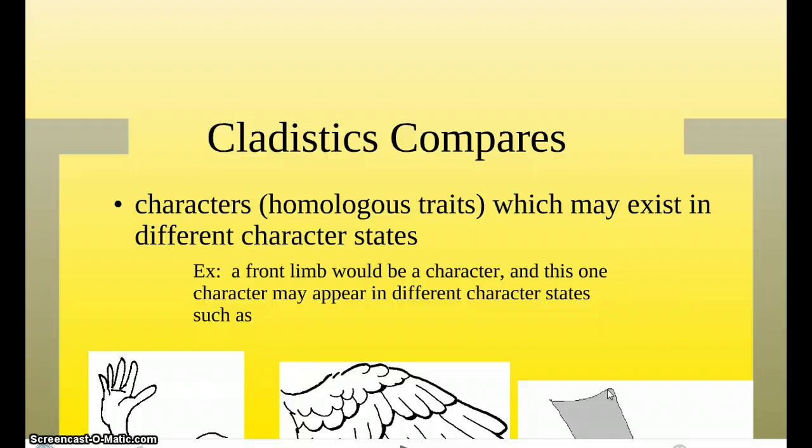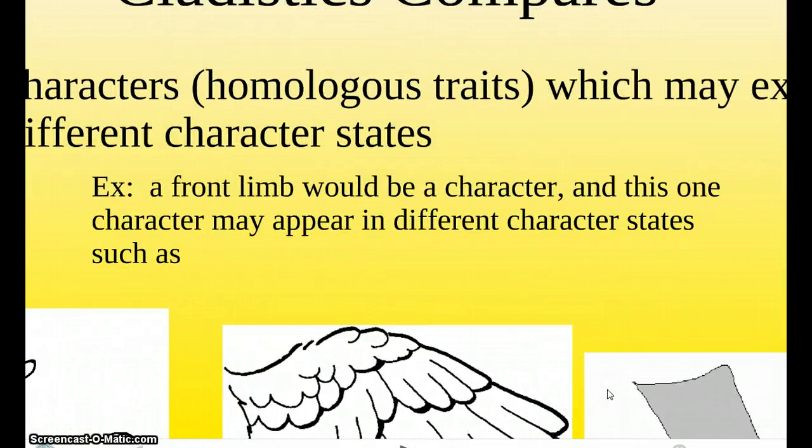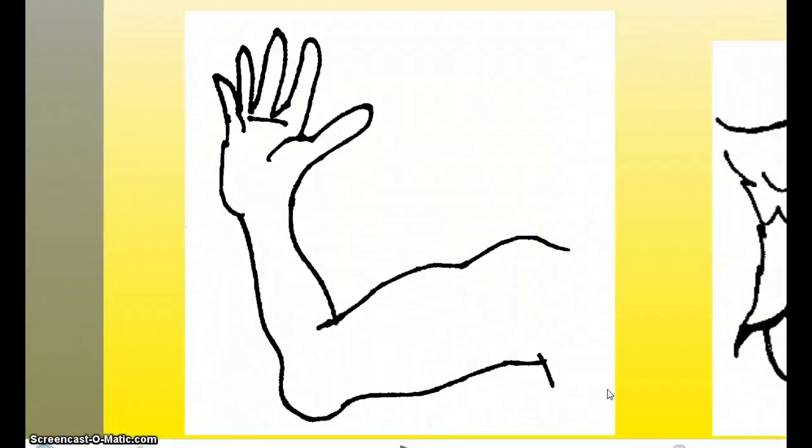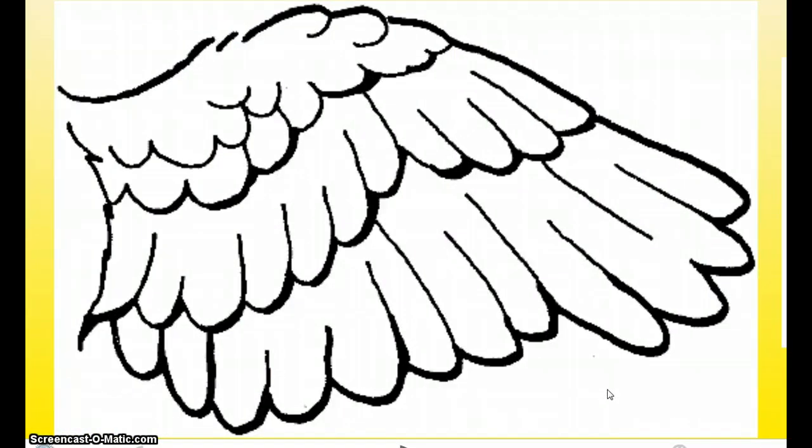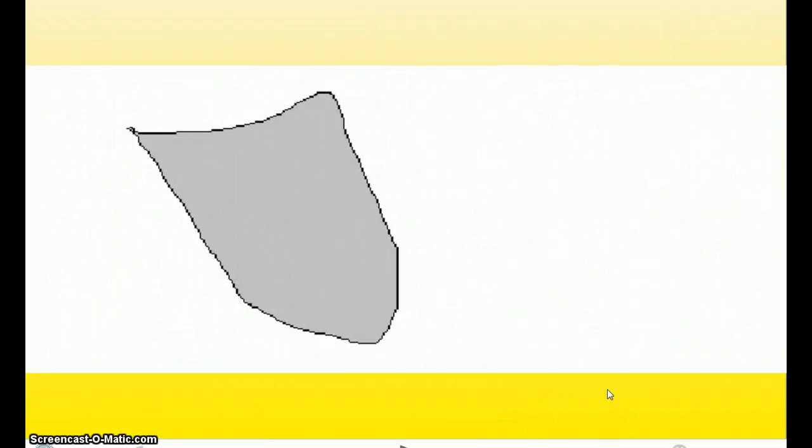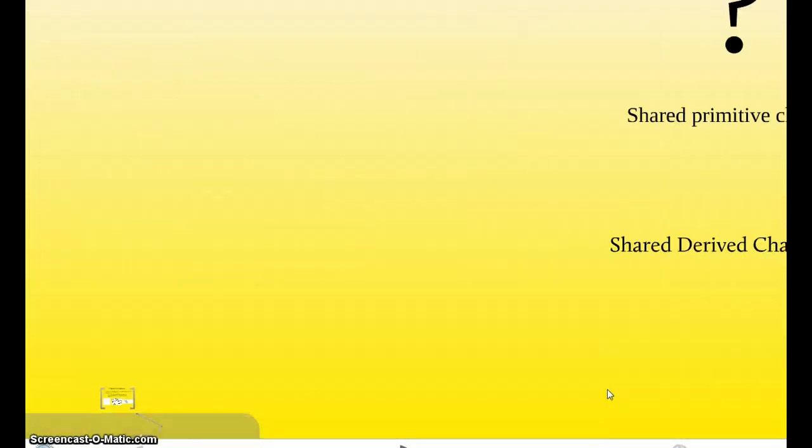An example of a character would be a front limb. And this character may appear in different character states, such as an arm, like us humans have, a wing, like birds have, and a badly drawn flipper that I drew on paint. Fish and dolphins would have flippers. I'm going to explain two more terms, and I'll clear everything up with a nice diagram.